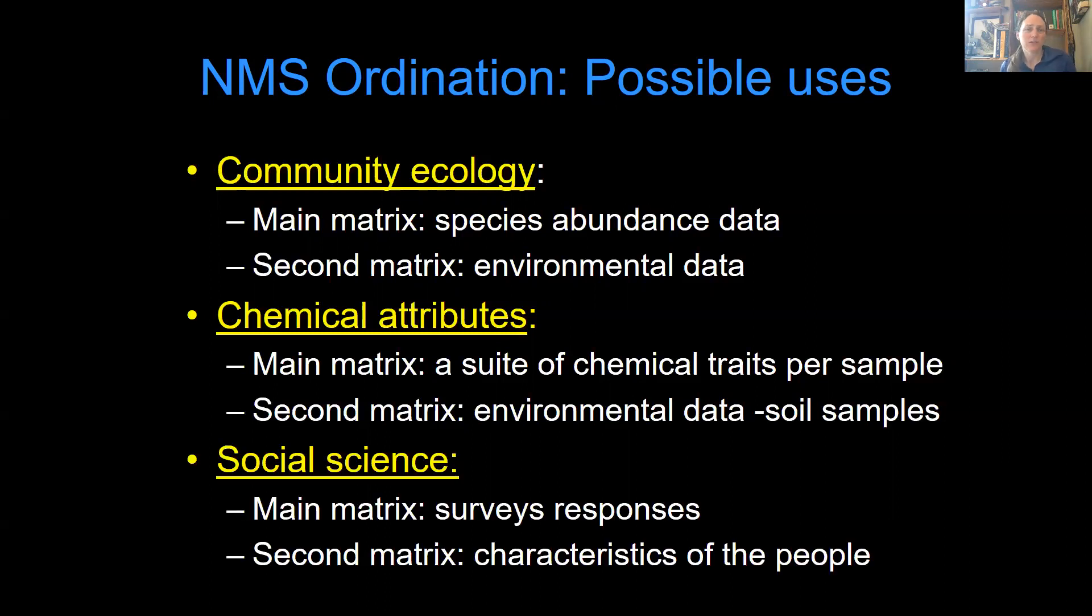And maybe you're doing something with social science. And so your main matrix might be a whole bunch of survey responses. What do people think about a bunch of things? And then your second matrix would be the characteristics of those people. What is their gender identity? What is their cultural identity? What is their income bracket? Where do they live? So it's going to be thinking about the main matrix and the second matrix in terms of community data.